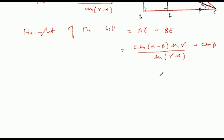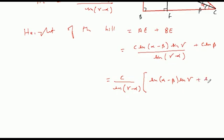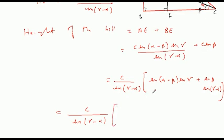यहाँ से हम लोग c/sin(gamma minus alpha) को common कर लेते हैं। तो यहाँ पर बचेगा: sin(alpha minus beta)·sin(gamma) + sin(beta)·sin(gamma minus alpha)। अब sin(beta)·sin(gamma minus alpha) को expand करें तो sin(gamma minus alpha) = sin(gamma)·cos(alpha) minus cos(gamma)·sin(alpha) हो जाएगा।